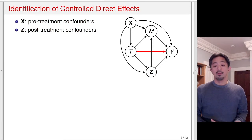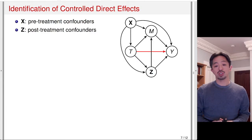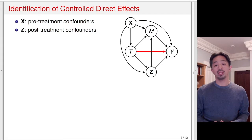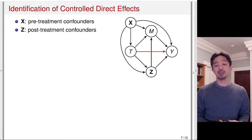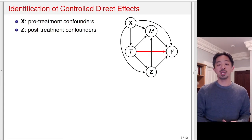The variable Z confounds the relationship between the mediator and outcome, so it is affecting both and is potentially affected by the treatment. What we want to do now is think about the assumptions that are sufficient to identify the controlled directed effect of the treatment on the outcome, which is represented by the red arrow in the DAG.